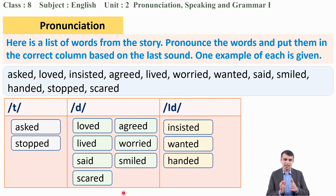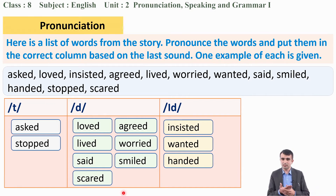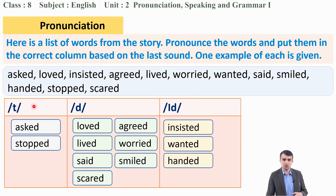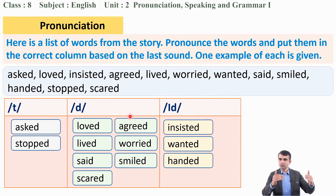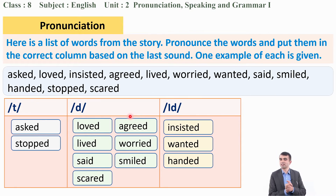You have done very well. You can try pronouncing all these words. All regular past tense forms are pronounced either as /t/, /d/, or /id/. You can classify the words this way. Now let's go to the next activity.